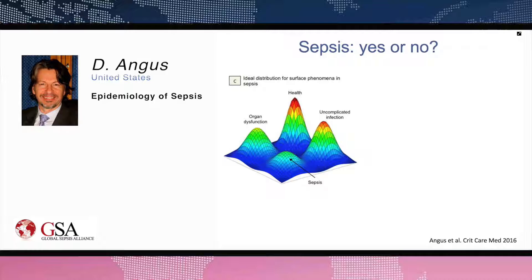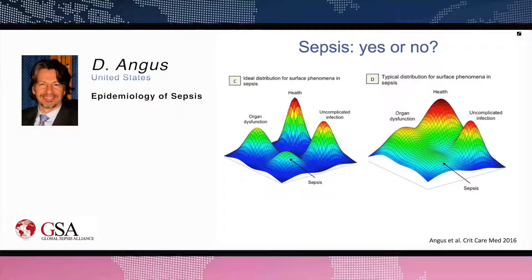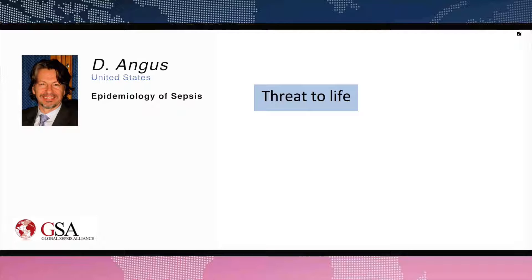Sepsis is on two axes — infection and organ dysfunction. Ideally we'd want four islands: healthy people, uncomplicated infection with no organ dysfunction, organ dysfunction with no infection, and organ dysfunction due to infection — the septic patients — each separated by clear blue water. But that's not what we have. We have one big mushy island with all these different syndromes rolling together with smooshy border zones and no easy division between them.